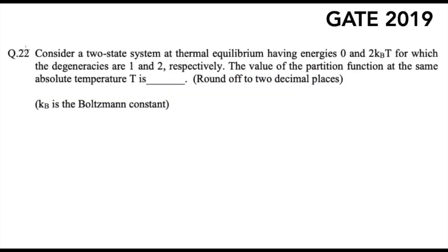The next question was also asked for one mark from statistical thermodynamics. It says: consider two states at thermal equilibrium having energies 0 and 2KBT, where KB is the Boltzmann constant, for which the degeneracy is G1 and G2 respectively. The value of the partition function at the same absolute temperature T is. This is a straightforward question based on a direct equation — you just need to know the formula for the partition function when the energy levels and degeneracy values are given.